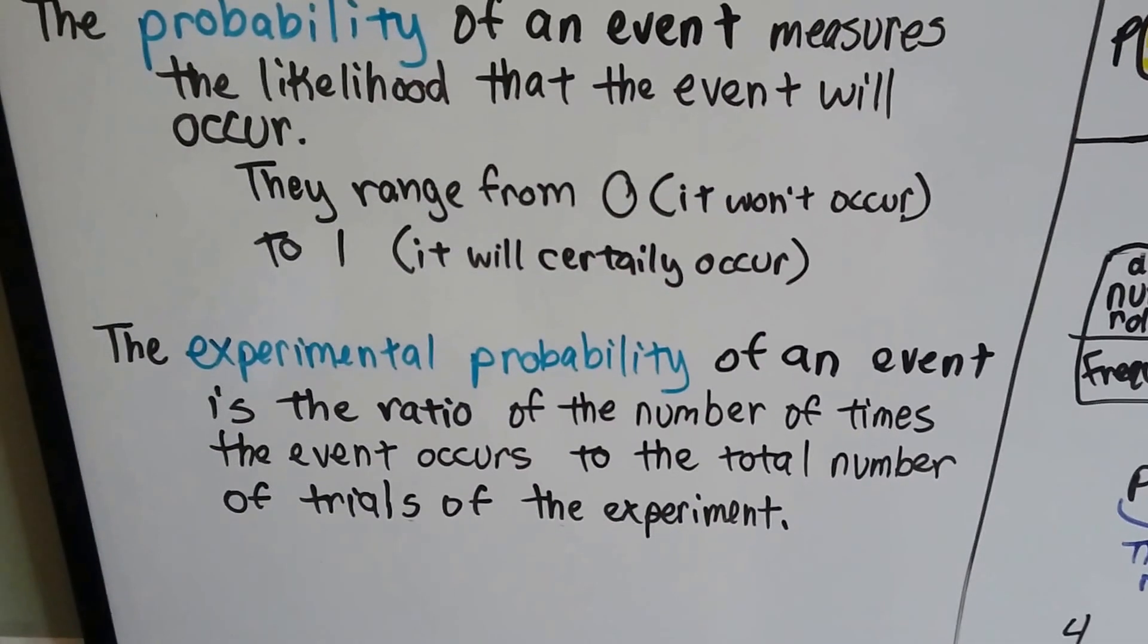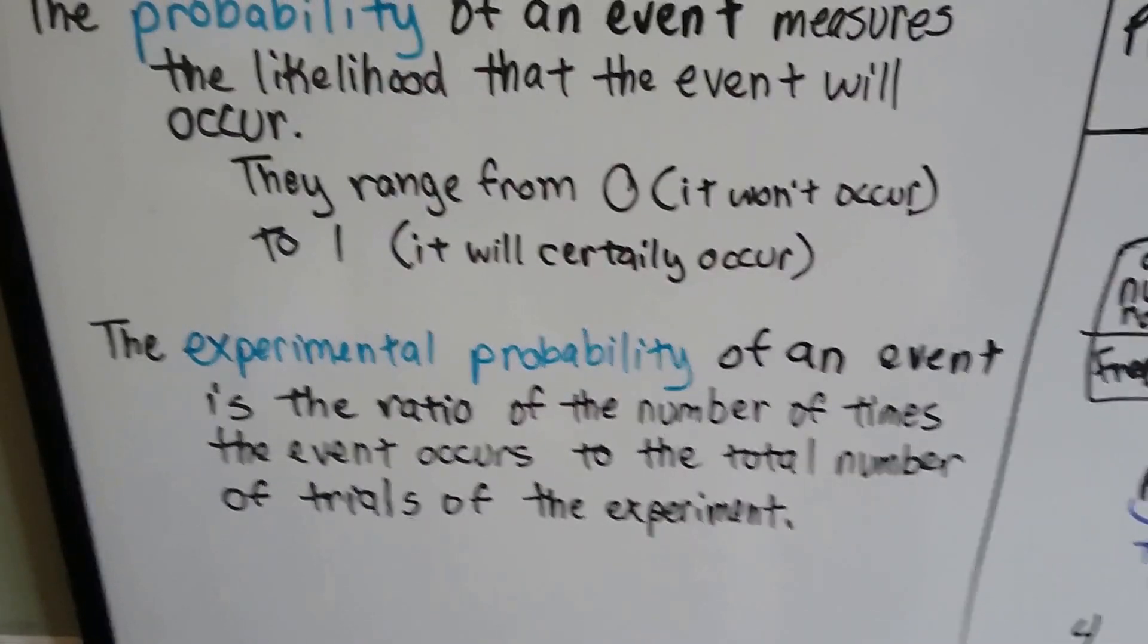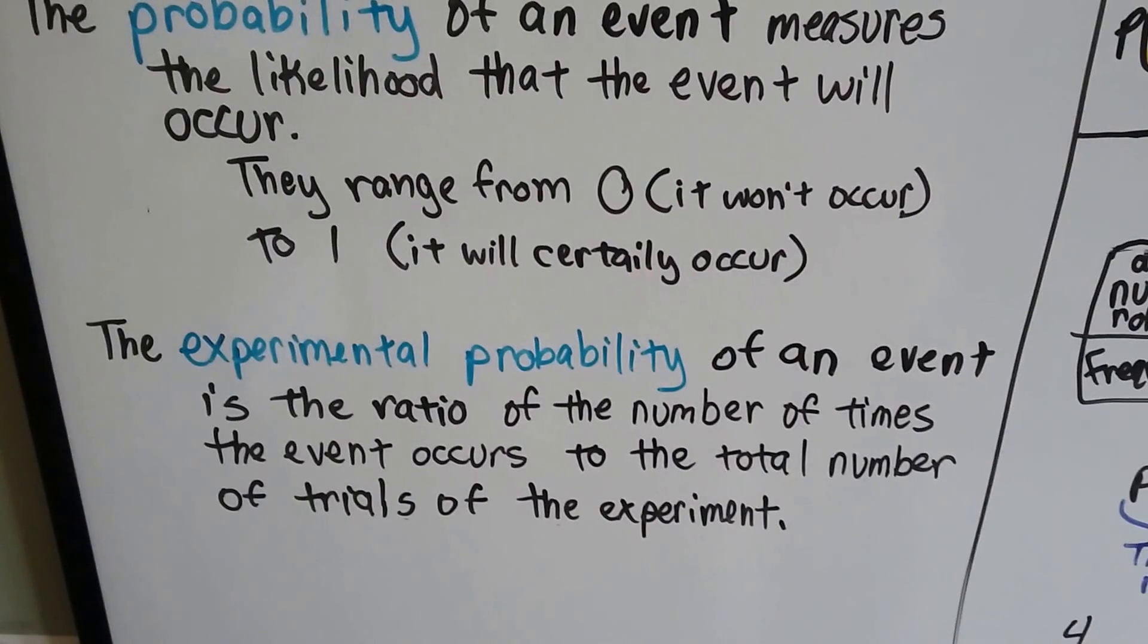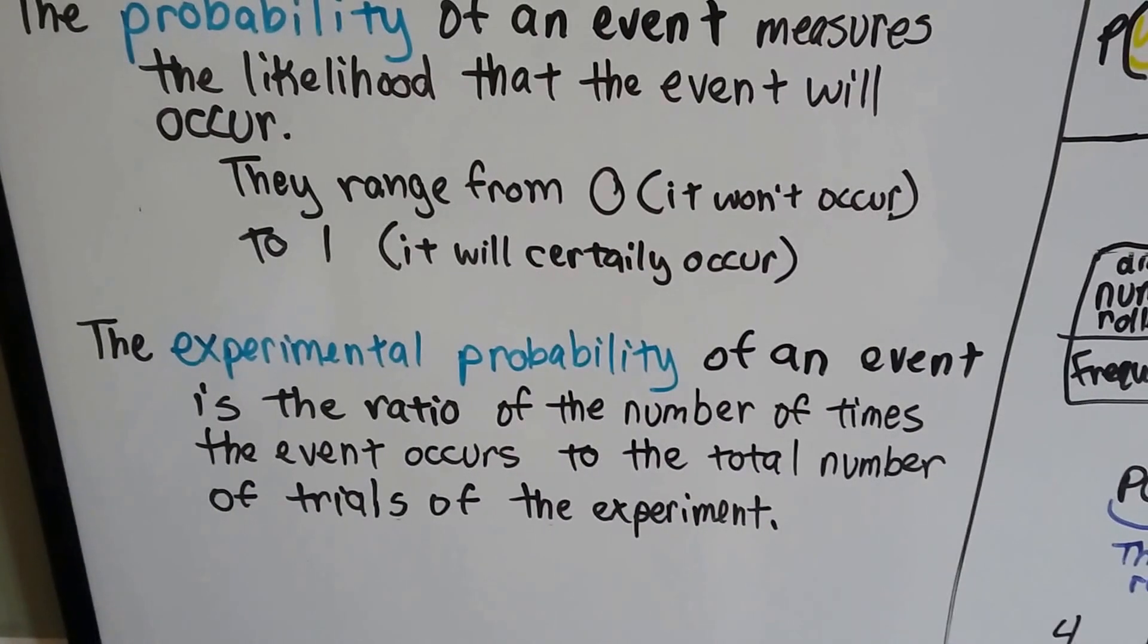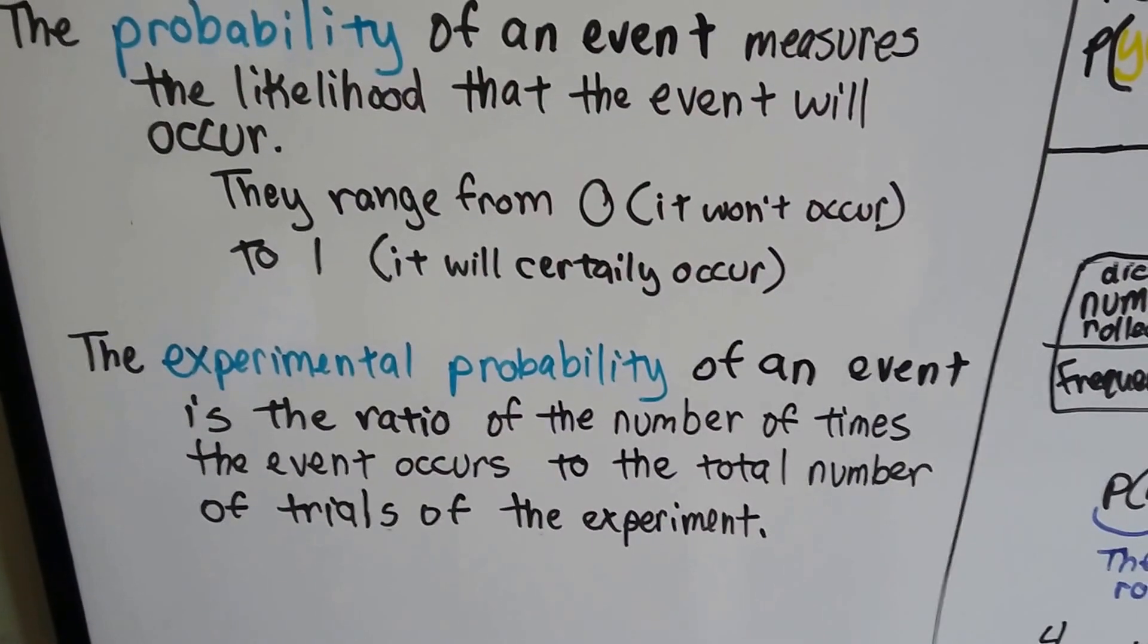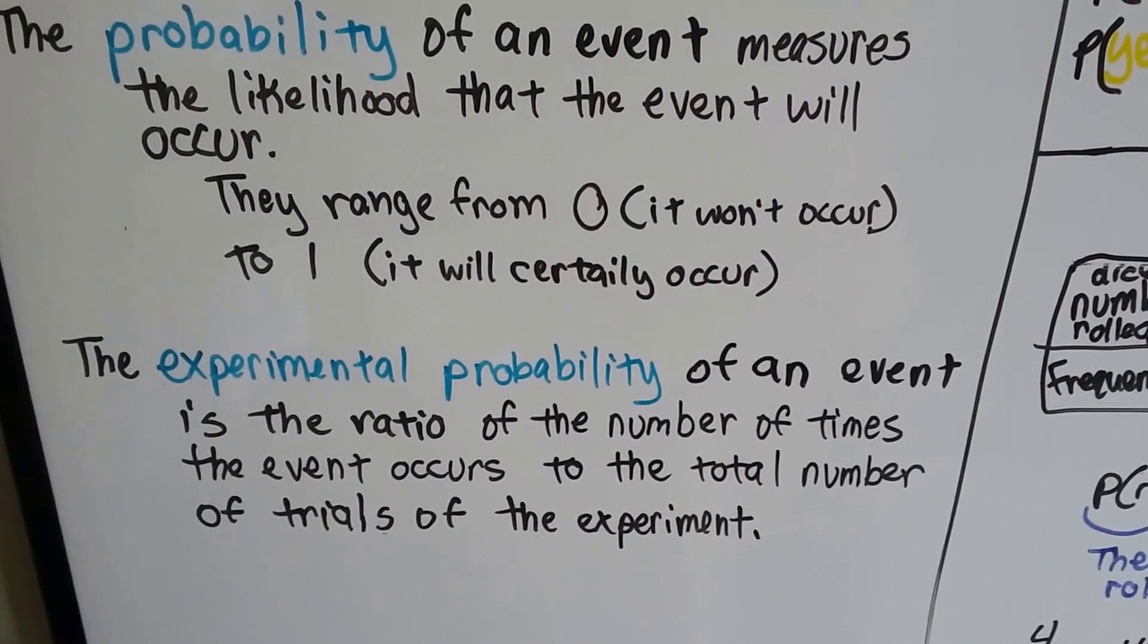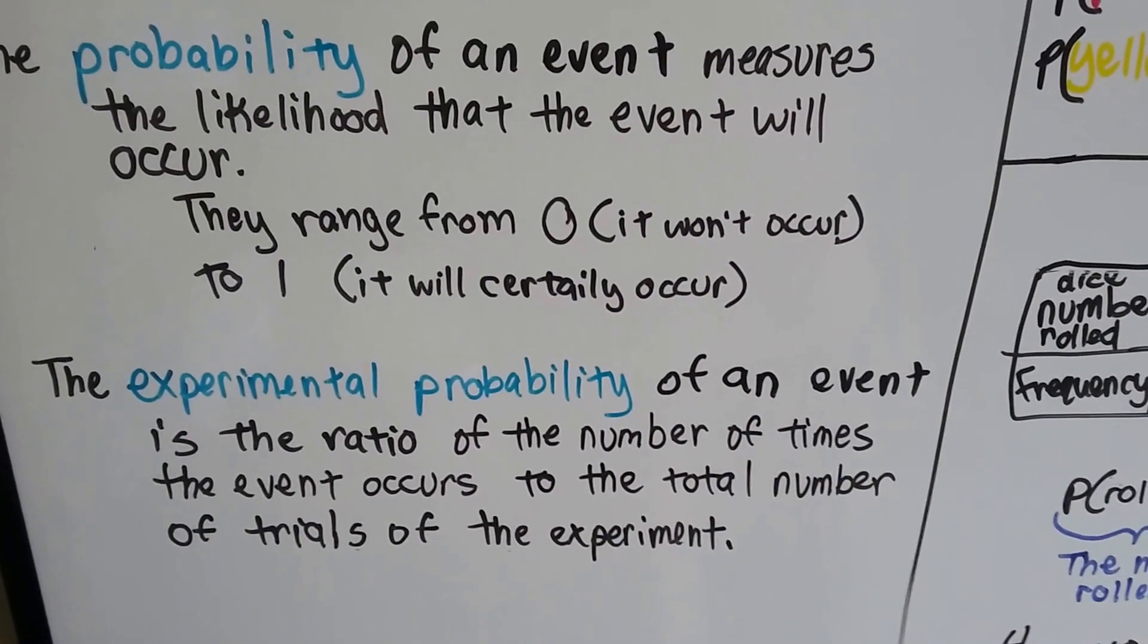So the experimental probability of an event is a ratio, it's like a fraction, of the number of times that the event occurs over the total number of trials of the experiment. It's the number of times it happened as the numerator, and the denominator is how many times that you tried to do the experiment.